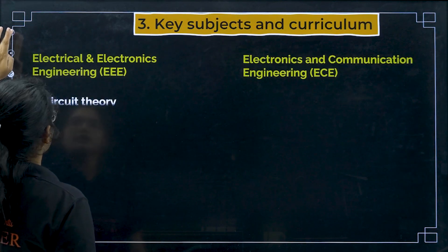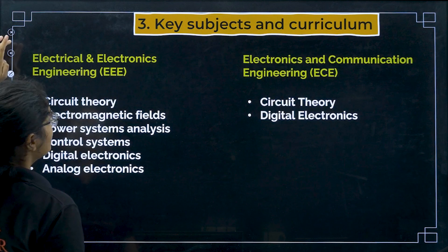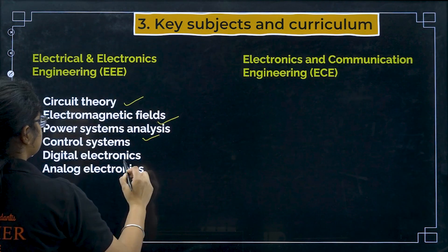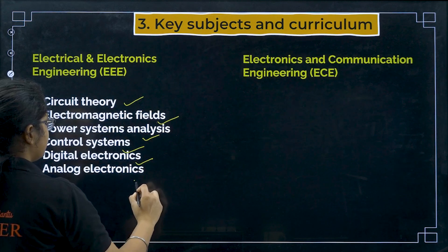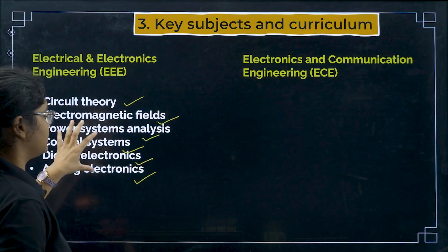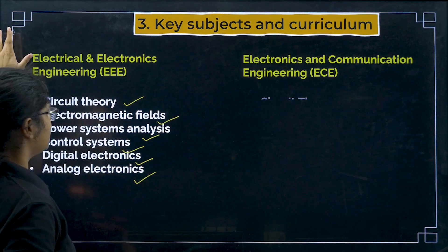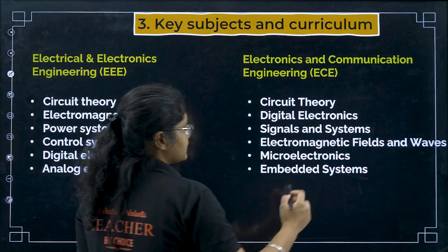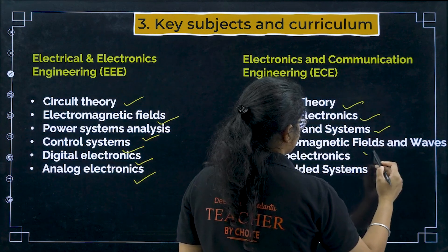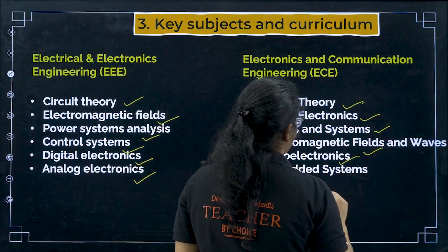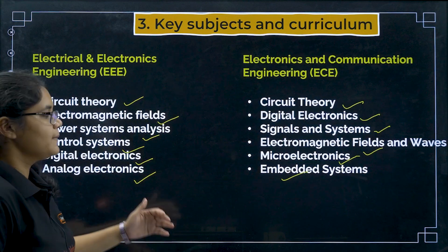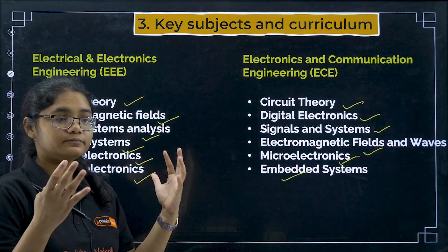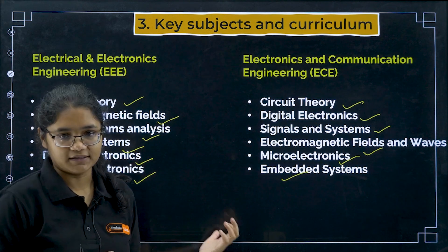Now, the key subjects. In EEE, you will study circuit theory, electromagnetic fields, power systems, control systems, digital electronics, and analog electronics. In ECE, the subjects include circuit theory, digital electronics, signals and systems, electromagnetic fields and waves, microelectronics, and embedded systems. These are the distinct subjects you will be studying in these two branches.